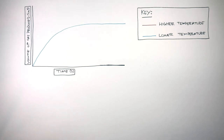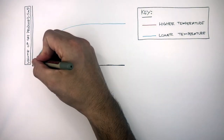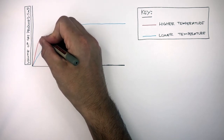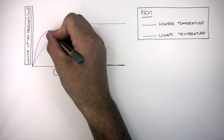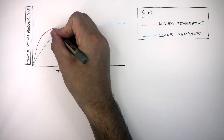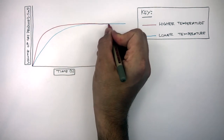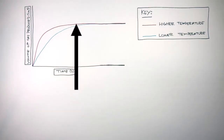For the higher temperature, initially the curve is steeper, which means the rate of reaction is faster. As the reaction progresses, the rate begins to slow as the curve becomes less steep. Eventually, the curve becomes flat or horizontal as the reaction has stopped. Notice how the reaction stops before the lower temperature due to the higher rate of reaction. They produce the same volume of gas as the mass of the reactants are the same, whether it's the higher temperature or lower temperature.